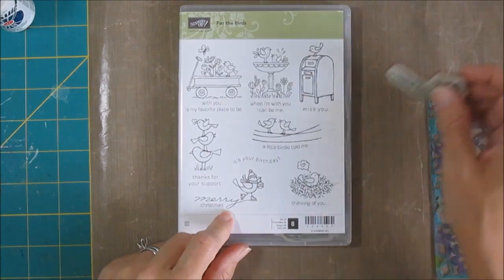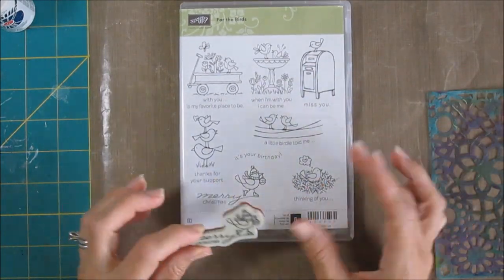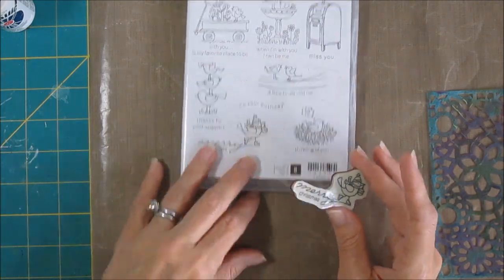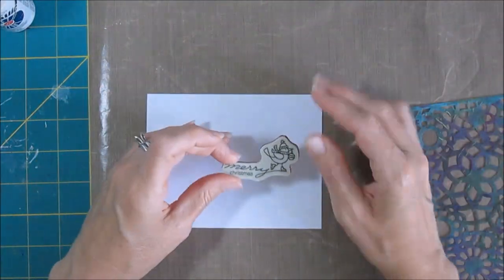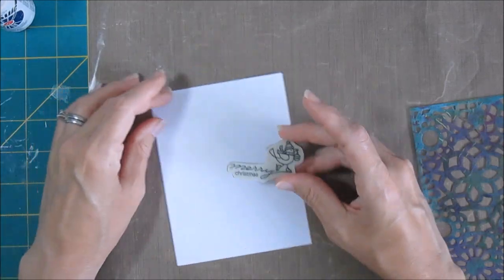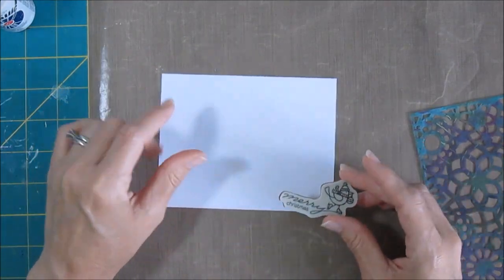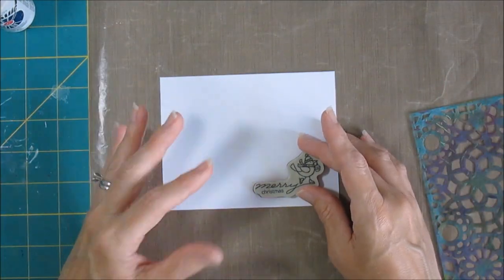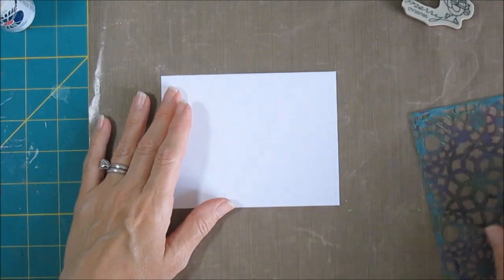There was one image I hadn't used at all, and that was this little birdie with Merry Christmas. So I thought I might go ahead and make a Christmas card from my stash. The challenge is this image is so small—if this were a card front, he's going to get lost pretty quick. So I need to give it some oomph. I have Christmas paper, but I wanted to use some of my supplies, so I thought it'd be pretty to do a snowflake background.